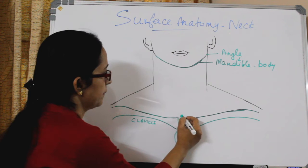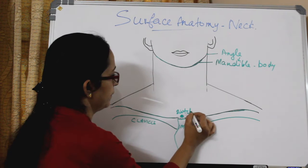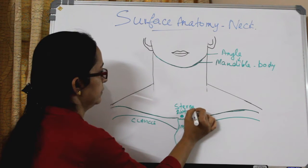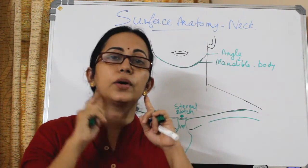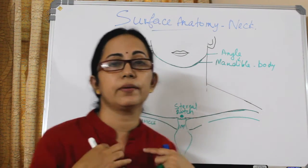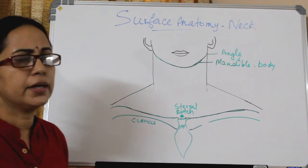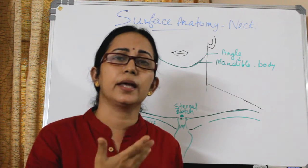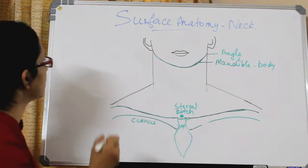So to summarize the bony landmarks: the sternal notch, mandible — body as well as angle — then the sternal notch, two clavicles, and manubrium. One important muscle in the neck divides the neck into an anterior compartment and a posterior compartment, and that muscle is the sternocleidomastoid.